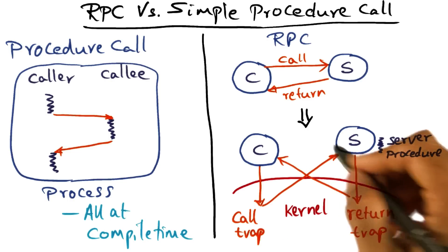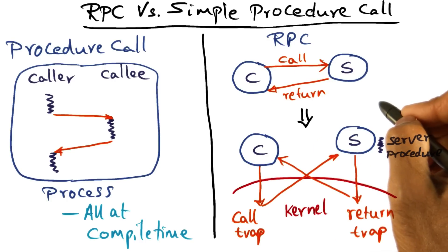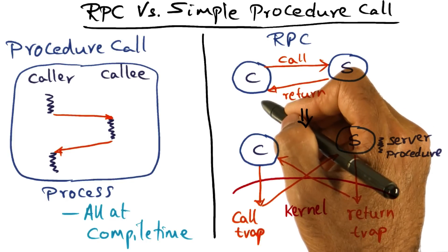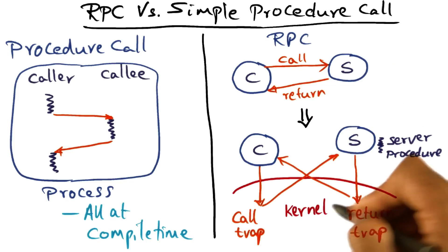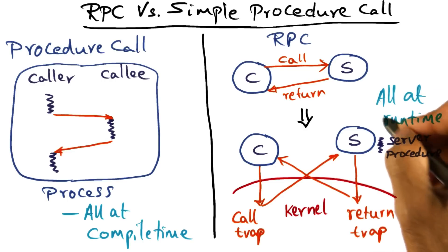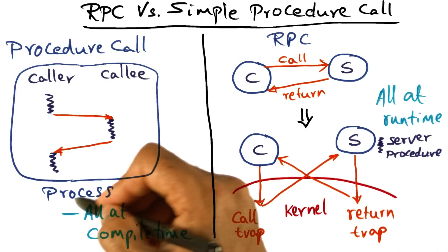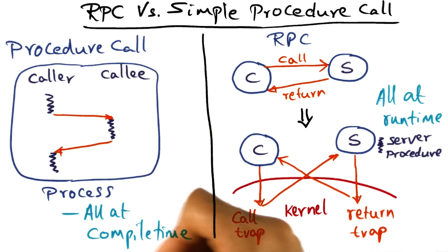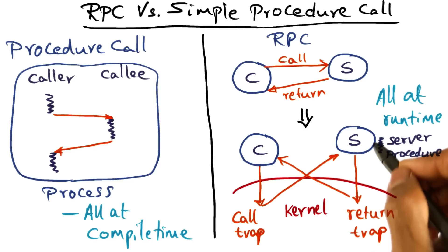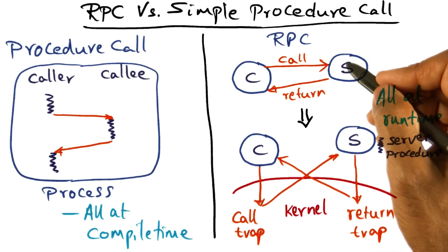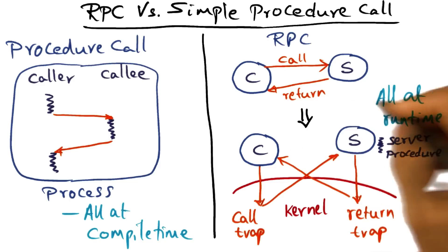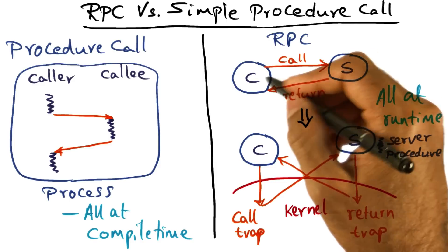The kernel can then reschedule the client, who receives the results and continues executing. So that's essentially what's going on under the cover. Even though the picture looks clean — a client makes a call, gets results, and continues — in reality what is going on under the cover is fairly complex. All of these actions are happening at runtime, as opposed to a simple procedure call where everything is happening at compile time.